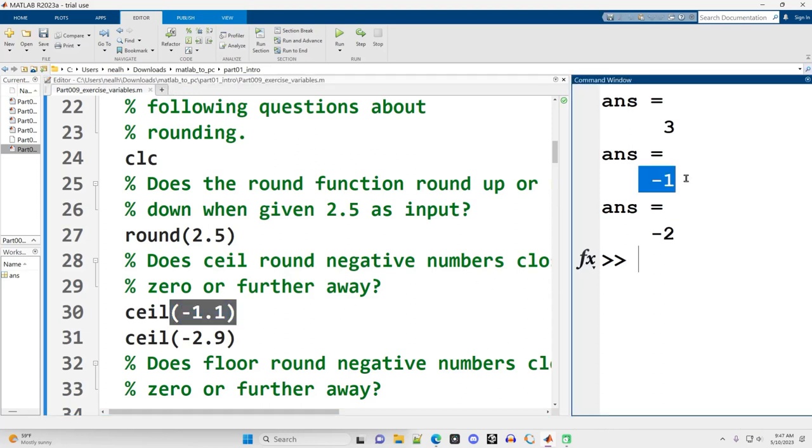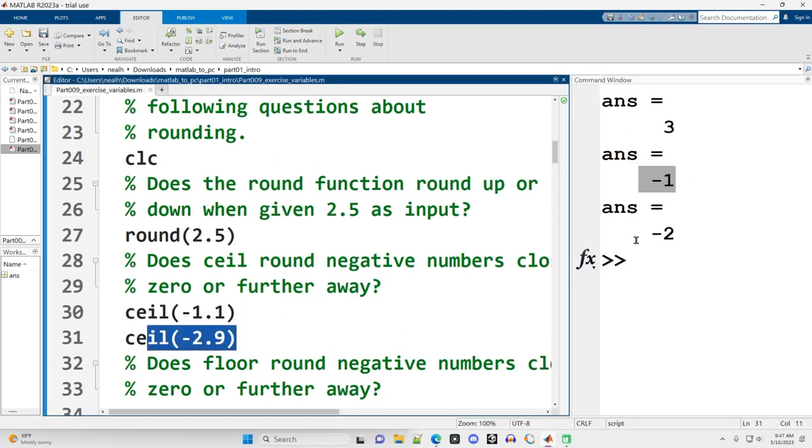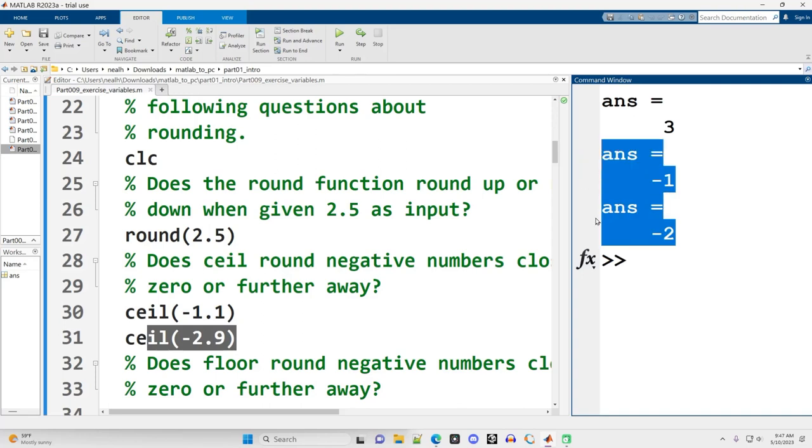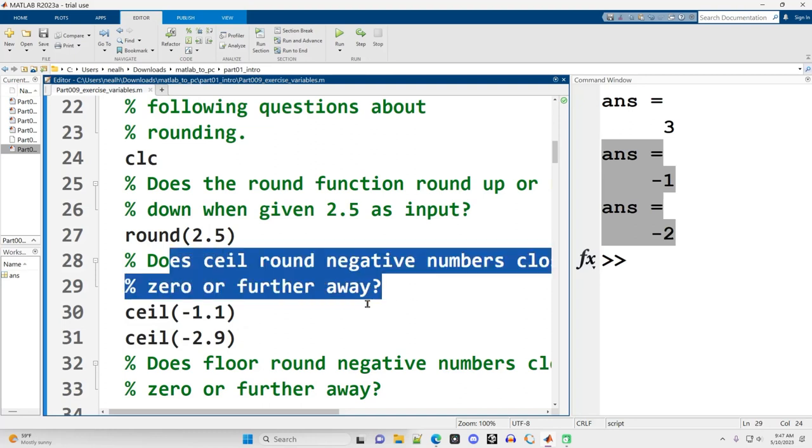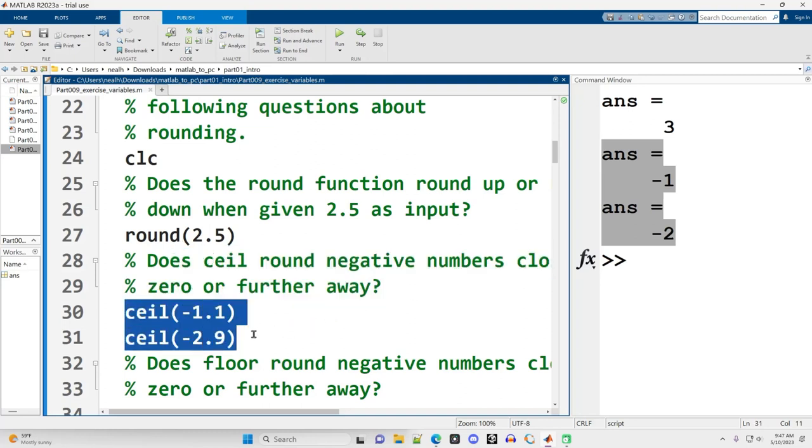So negative 1.1 gets rounded to negative 1, and negative 2.9 gets rounded to negative 2. Both of these are closer to zero than the initial negative number. So the answer is closer to zero for this one. What ceiling does is, if you imagine your number line vertically, positive numbers at the top, like if you'd count down like 10, 9, 8, 7, 6, all the way to zero in the middle, and then down your negative numbers, negative 1, negative 2, and so on downward, ceiling always rounds up that number line.